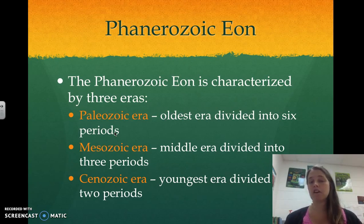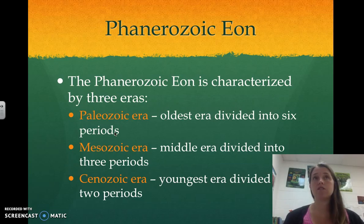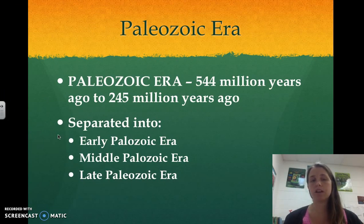The Phanerozoic Eon is characterized by three eras: the Paleozoic Era, which is the oldest and divided into six periods; the Mesozoic Era, that's the middle — you can remember Mesozoic is middle — and it is divided into three periods; and the Cenozoic Era, that's the youngest, the most recent, the one we are currently in, and it's divided into two periods.